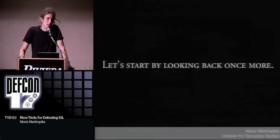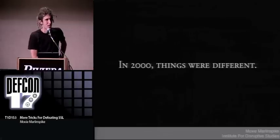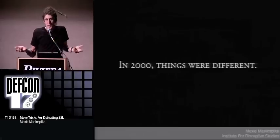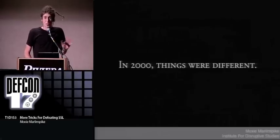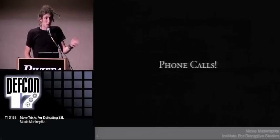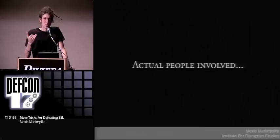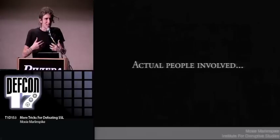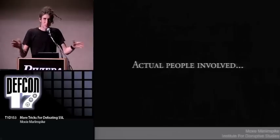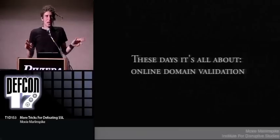Let's look back into the past. Back around 2000 or the late 90s, things were different. When I was applying for certificates to exploit the basic constraints vulnerability, I needed to get a certificate for a domain I owned. Back then it was crazy — there were notaries, you had to show actual state ID to people, there were phone calls with actual people. I remember talking on the phone with a guy at Verisign who was grilling me. That is a bygone era. Today it's all about online domain validation — that whole process has been replaced by a website.